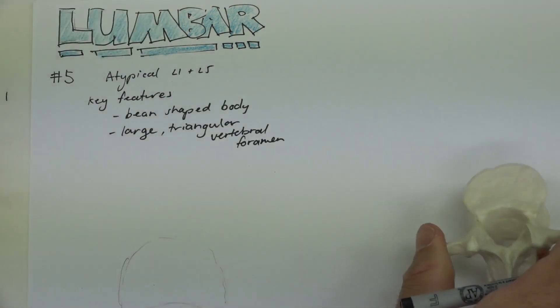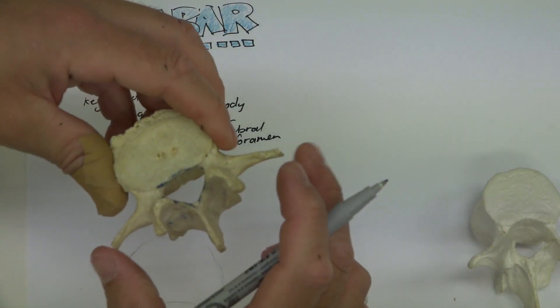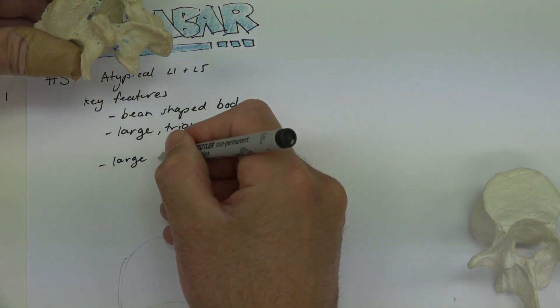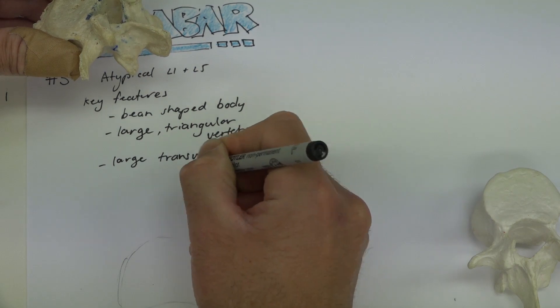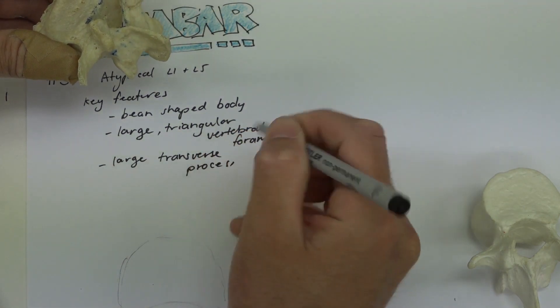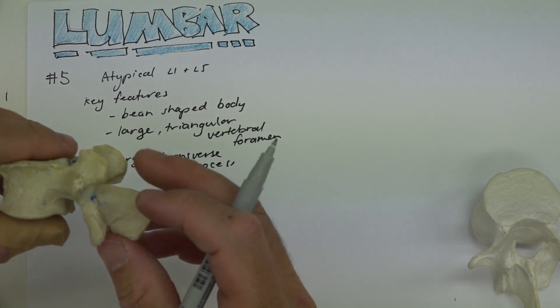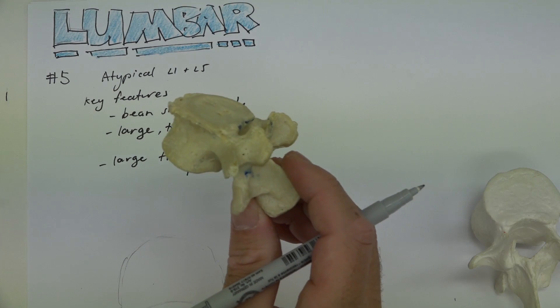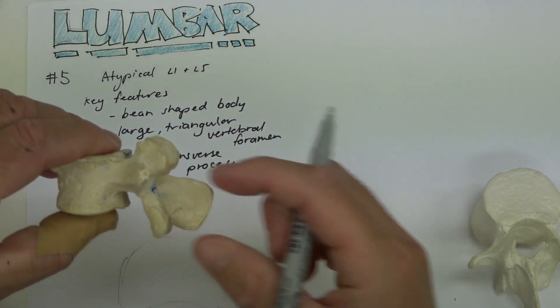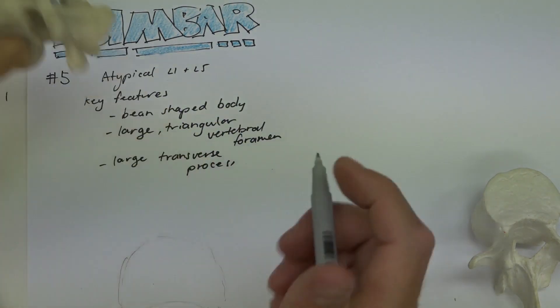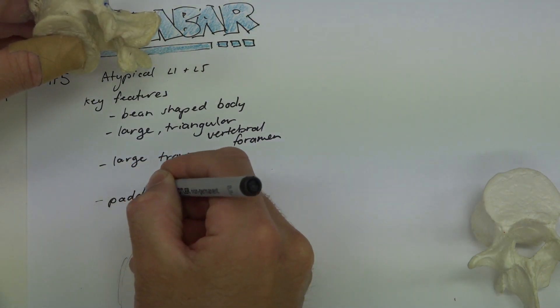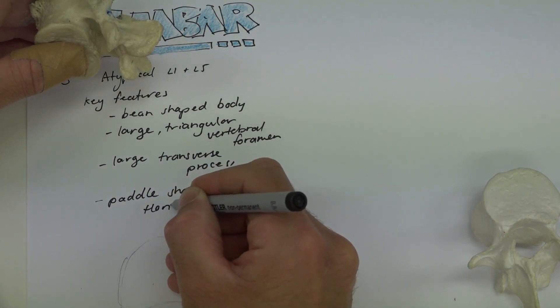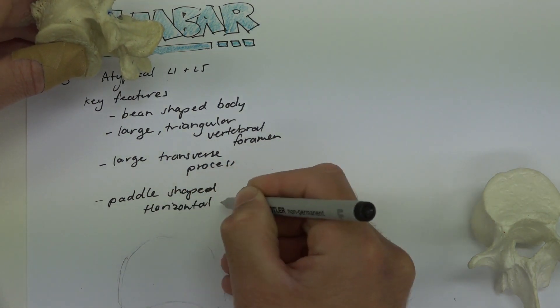Then it's got very large transverse processes, as we can see on this bone here, and that's for attachment of big muscles. And the spinous process is directed horizontally and is shaped a bit more like a paddle. So paddle-shaped horizontal spinous process.